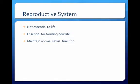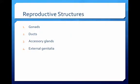The reproductive system is the only system that is not essential to the life of the individual. The male and female reproductive systems produce and store specialized reproductive cells that combine to form new life. The reproductive organs also secrete hormones that play major roles in the maintenance of normal sexual function. The reproductive structures include the gonads, or organs that produce gametes and hormones, ducts to transport the gametes, accessory glands that secrete fluids into the ducts, and external genitalia.